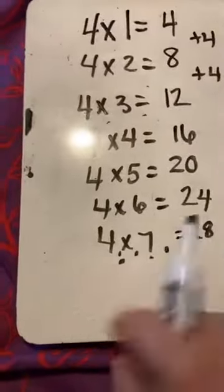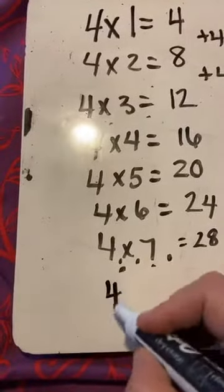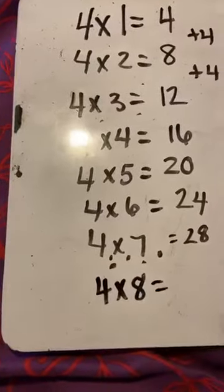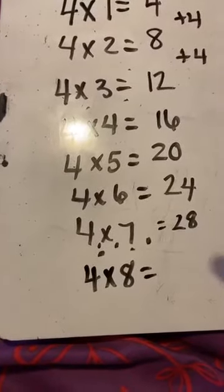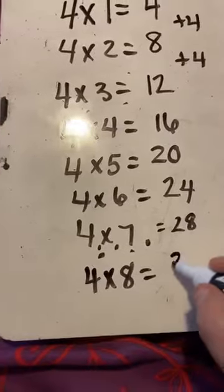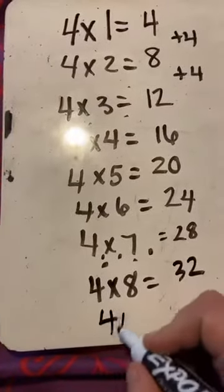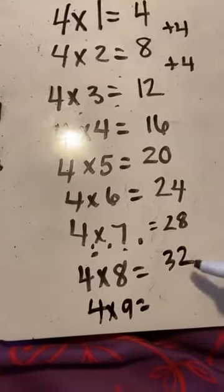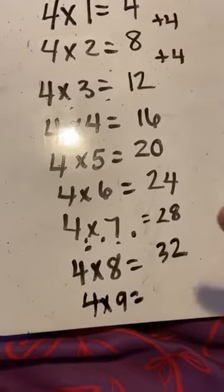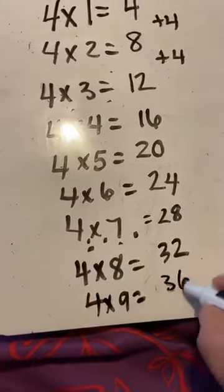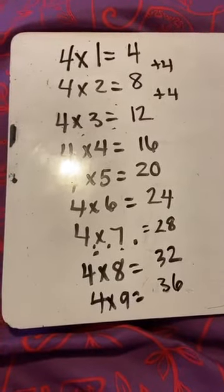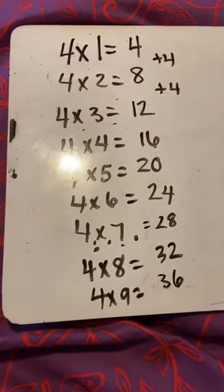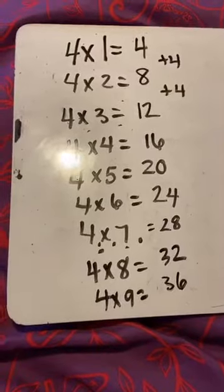So then let's do 4 times 8. 4 times 8. 28. Add on 4. 29, 30, 31, 32. And then let's do 4 times 9. Add on 4. 32, 33, 34, 35, and 36. Very good. So 4, 8, 12, 16, 20, 24, 28, 32, 36. Keep practicing those in your mind.